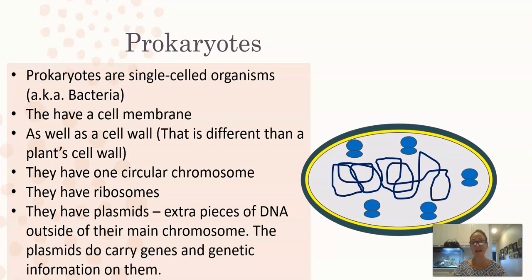And they have these extra pieces of DNA called plasmids, and these plasmids are tiny. They carry anywhere from 50 to 500 genes on them, but they are separate from their one large main circular chromosome.